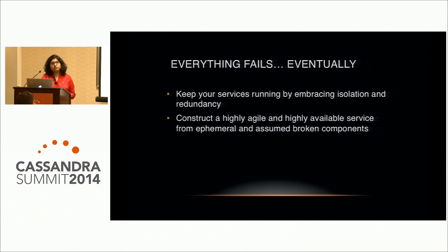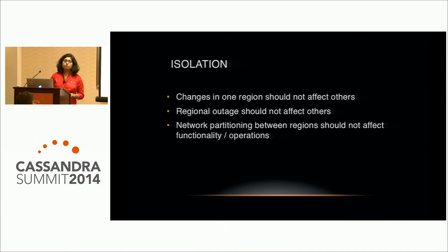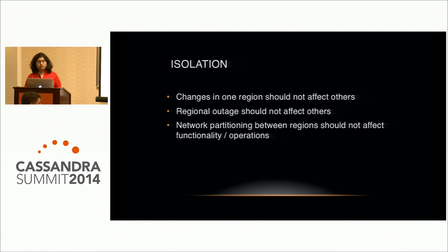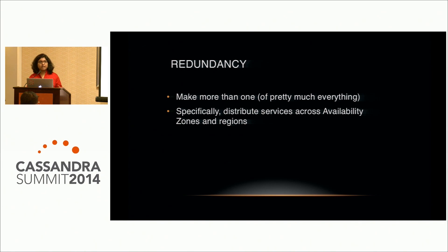Isolation means sharding and partitioning regions such that changes in one region do not impact others, regional outages in one region have no effect on another, and network partition events between regions do not affect functionality. Redundancy means making more of everything — distributing services and your back-end across multiple regions and multiple zones so that you get more availability.